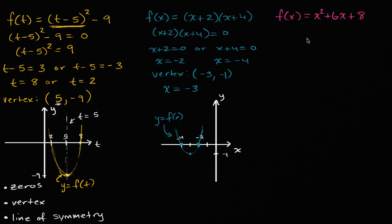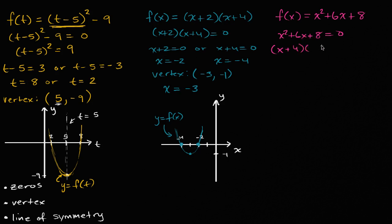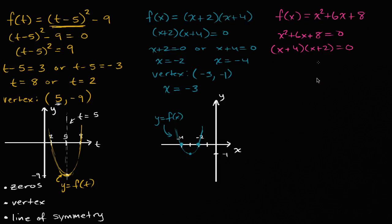For the third function, to solve x² + 6x + 8 = 0 it's useful to factor. What two numbers add up to six and have a product of eight? Four and two: 4 + 2 = 6 and 4 × 2 = 8. So this factors as (x + 2)(x + 4) = 0. This is actually the exact same function as the previous one, just written in different form. So the solutions, vertex, line of symmetry, and graph are all the same — these functions were just written in different ways.